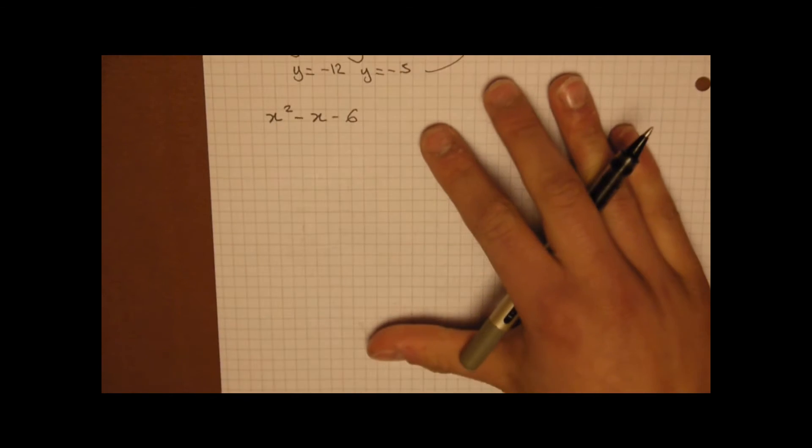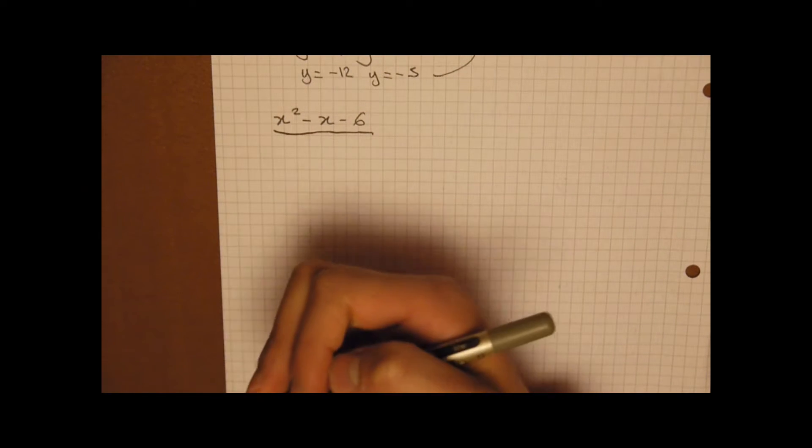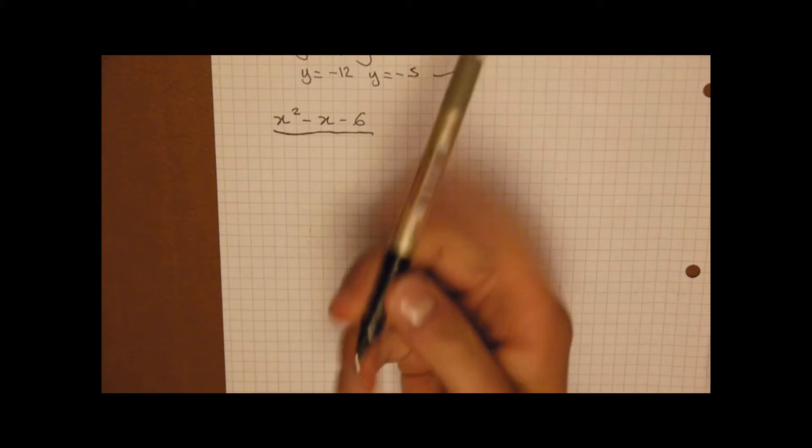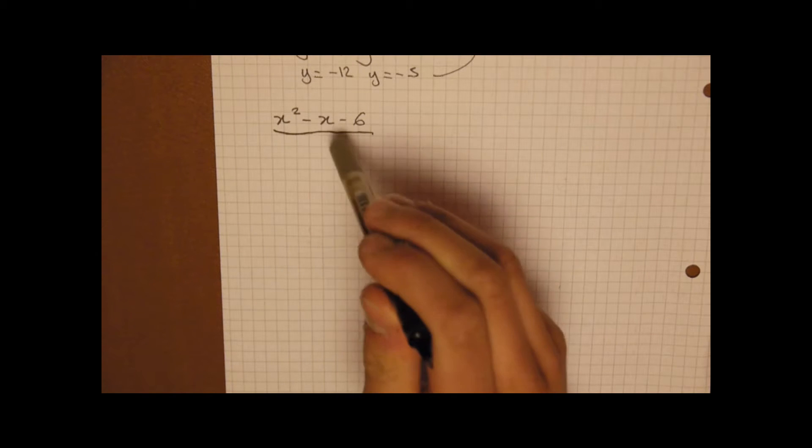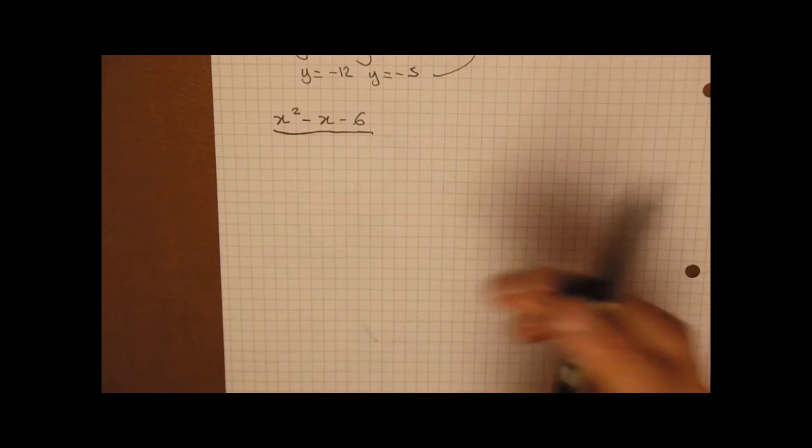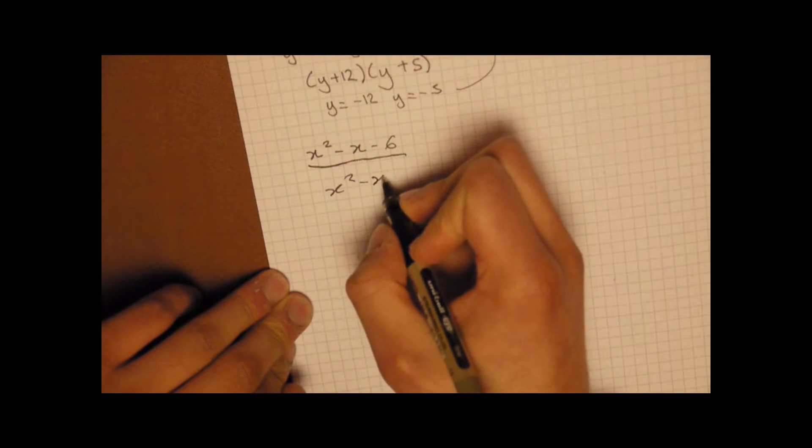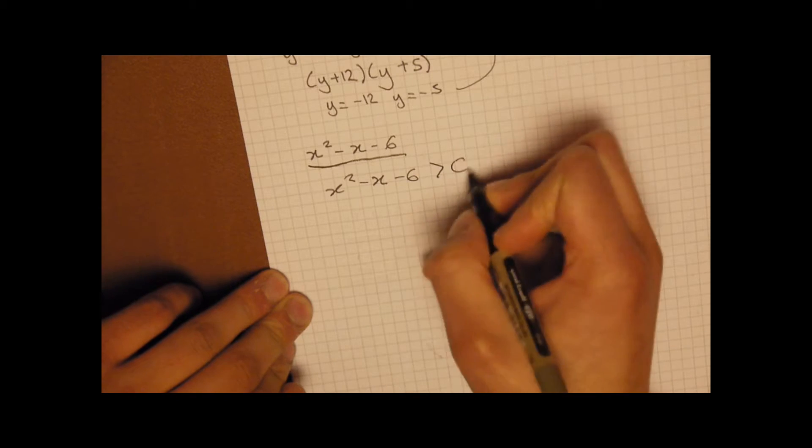Right then, I'm going to talk about one other thing, and that is quadratic inequalities, which are very popular on the C1 paper. They're normally, in fact, they are always worth 4 marks. Always will be worth 4 marks. Now, we're going to take x squared minus x minus 6 must be greater than 0.